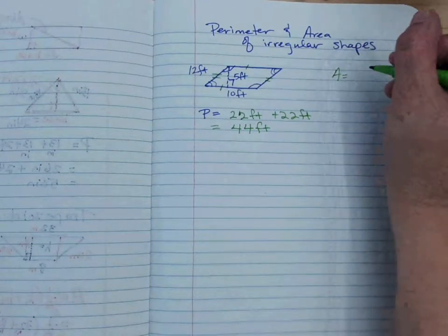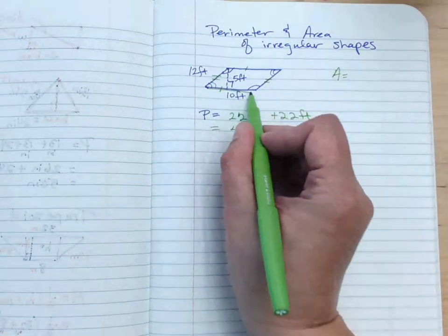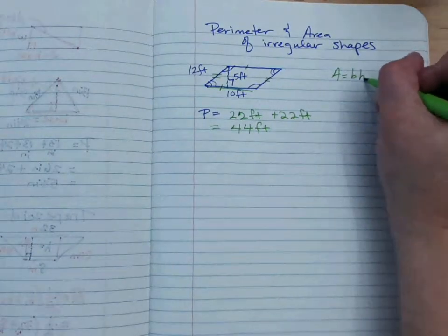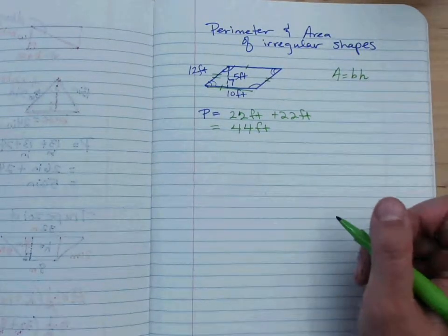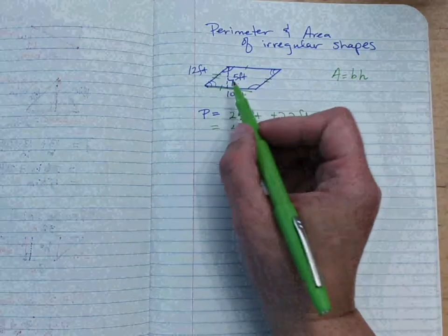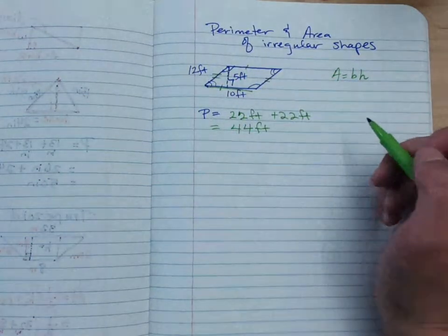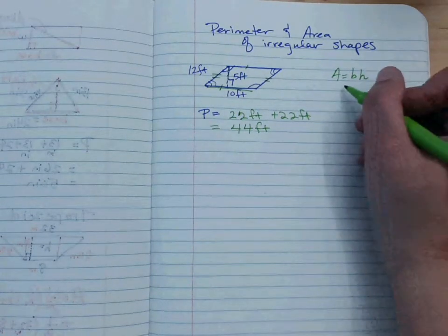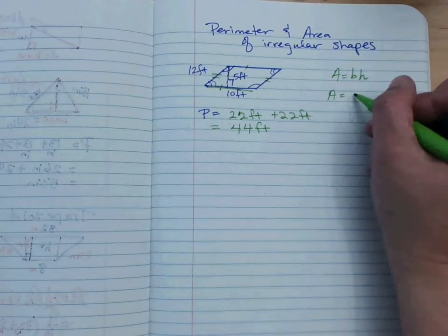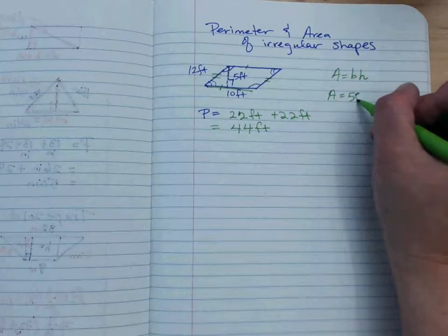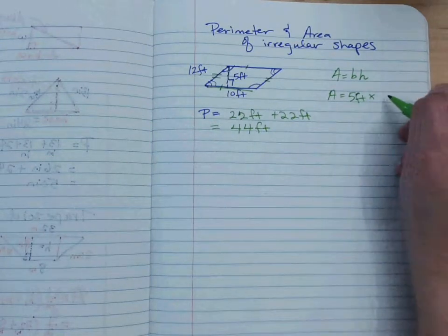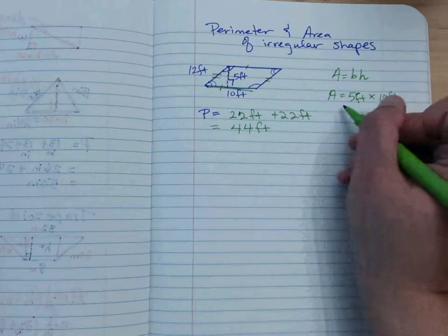For the area here, we're going to do the base times the height. So you can see the height is the 90 degree angle. That's the reason, is the length at a 90 degree angle. That's why it would be 5. So your area is actually 5 feet times what? 10 feet. And what do we get there?